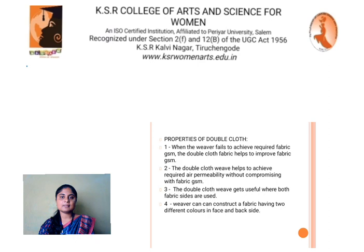Properties of double cloth. When the weaver fails to achieve required fabric GSM, the double cloth fabric helps to improve fabric GSM. The double cloth weave helps to achieve required air permeability without compromising with fabric GSM. The double cloth weave is useful where both fabric sides are used, and the weaver can construct a fabric having two different colors on the face and backside.